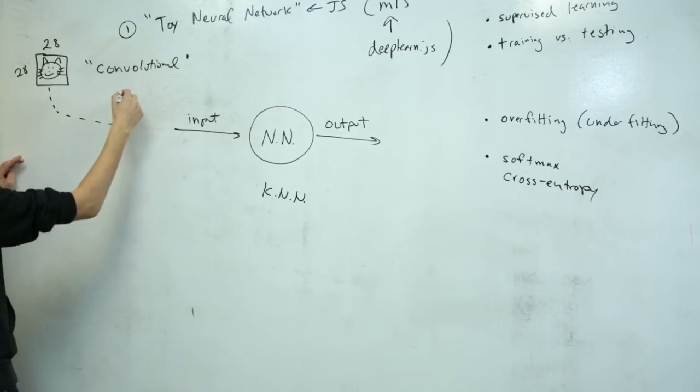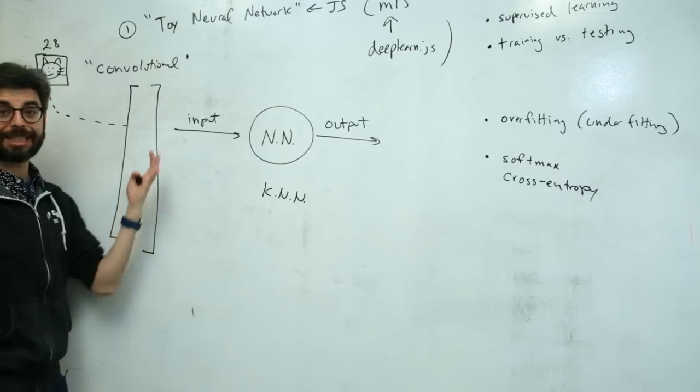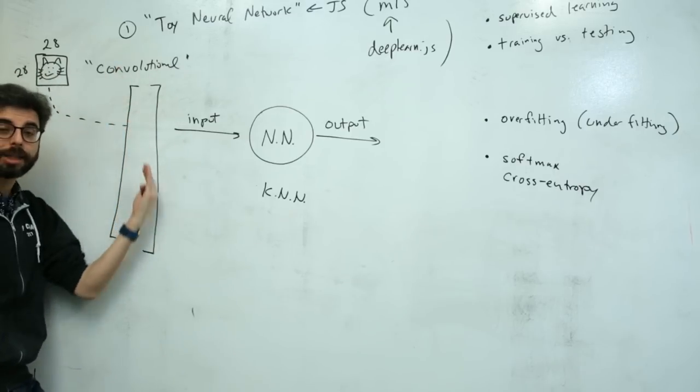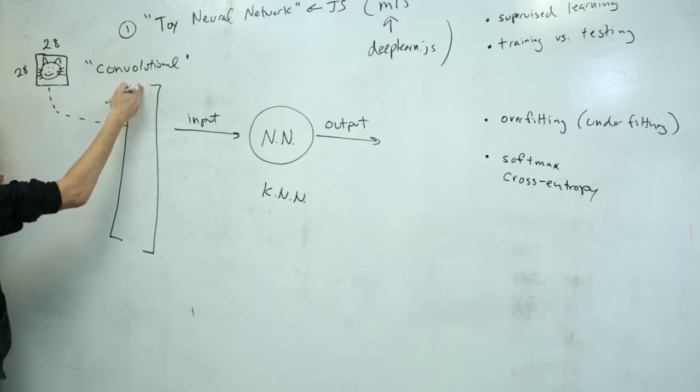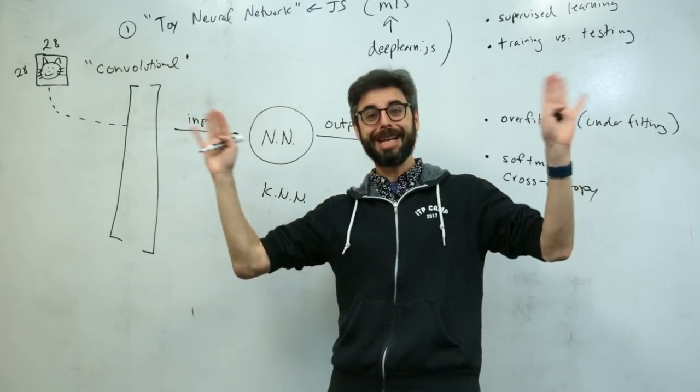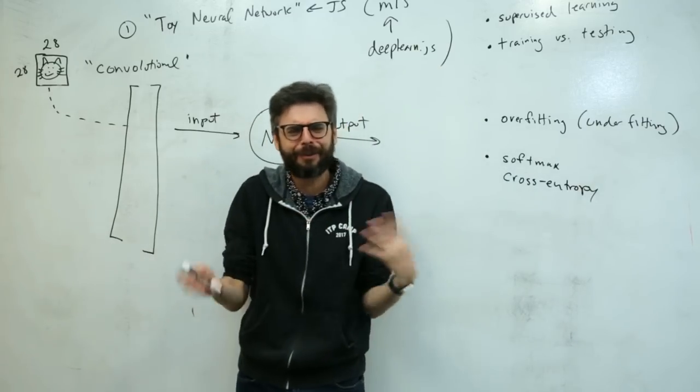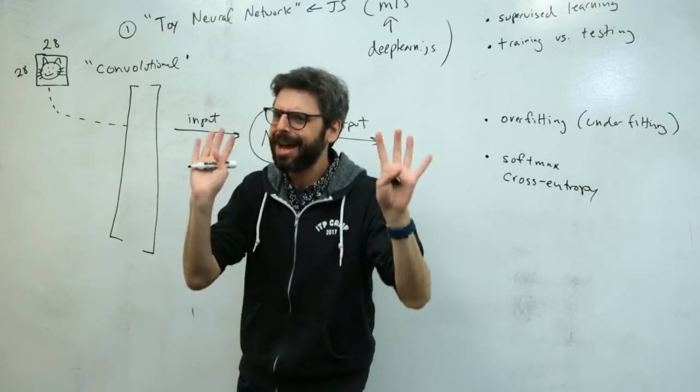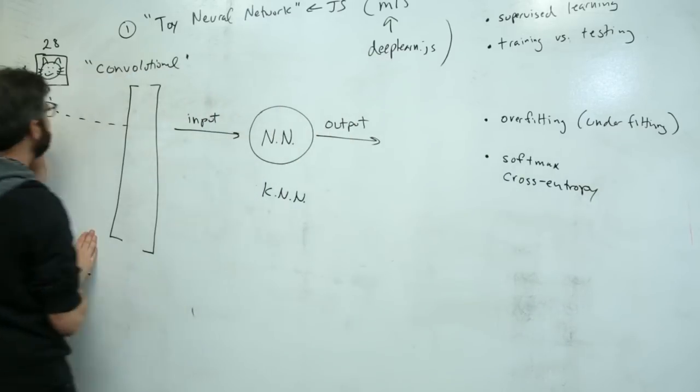This needs to be flattened, and it needs to be flattened into what's often referred to as a vector or a one column matrix. So I need to take this data, it's an image, and convert it to a list of numbers. This is probably, in many ways, the most important thing that you need to do when you're working with machine learning. It's like, what is my data? How do I format it? And there's lots of other questions about it as well.